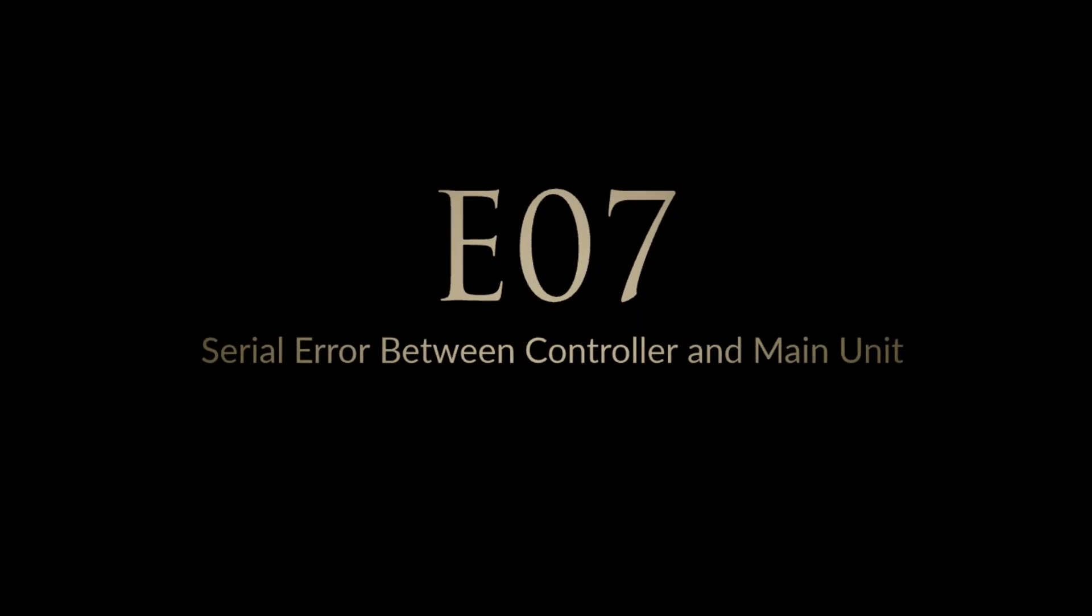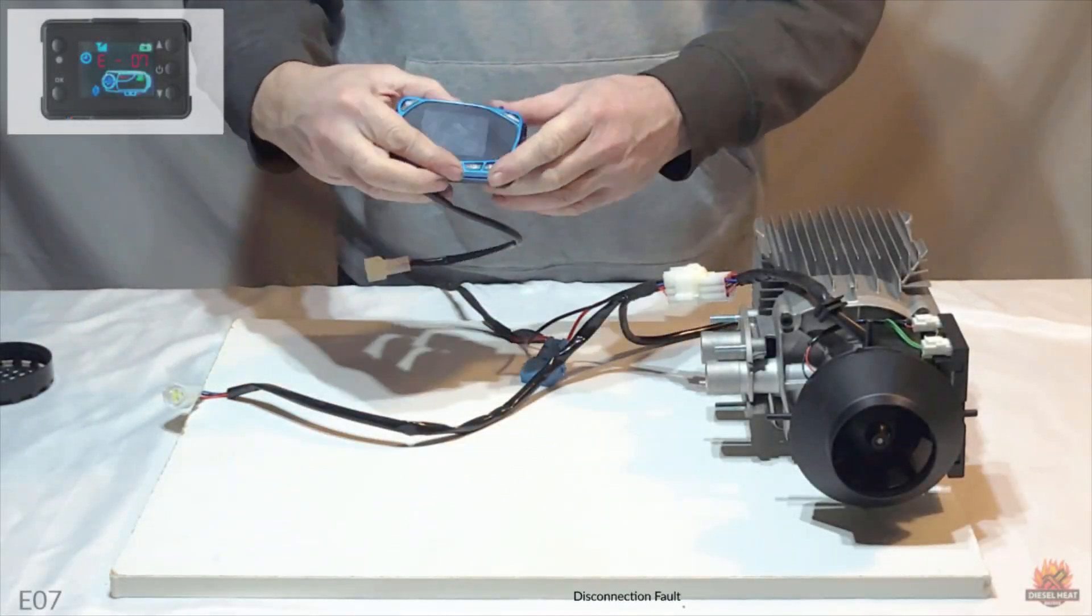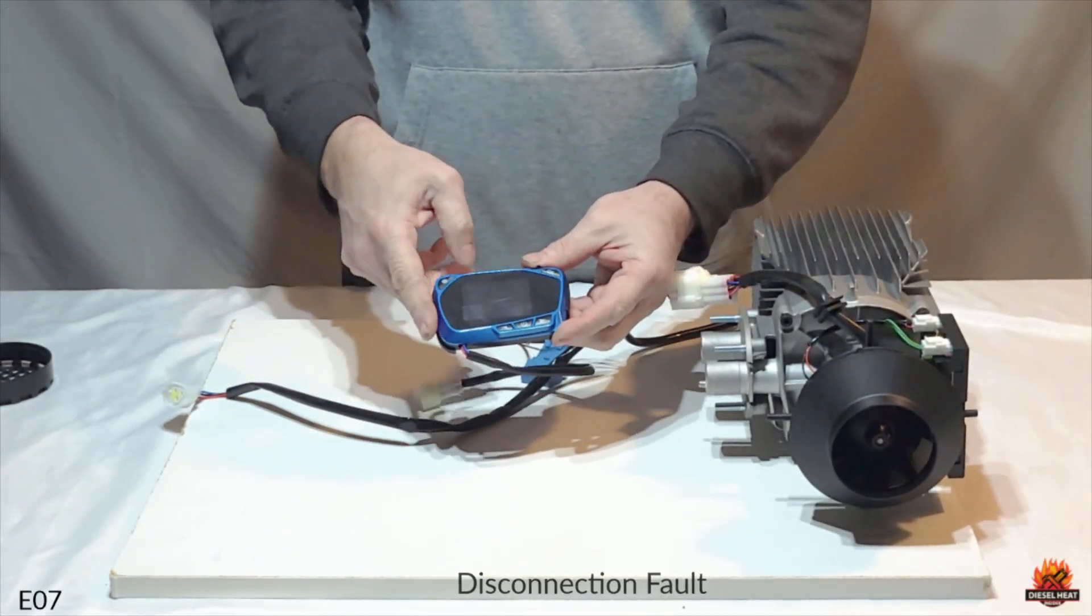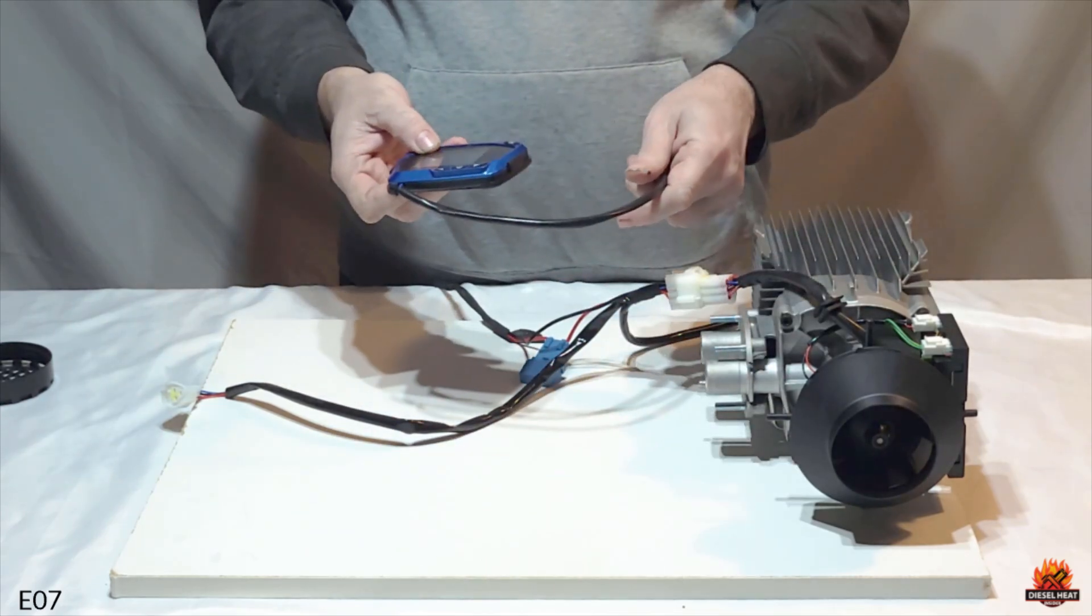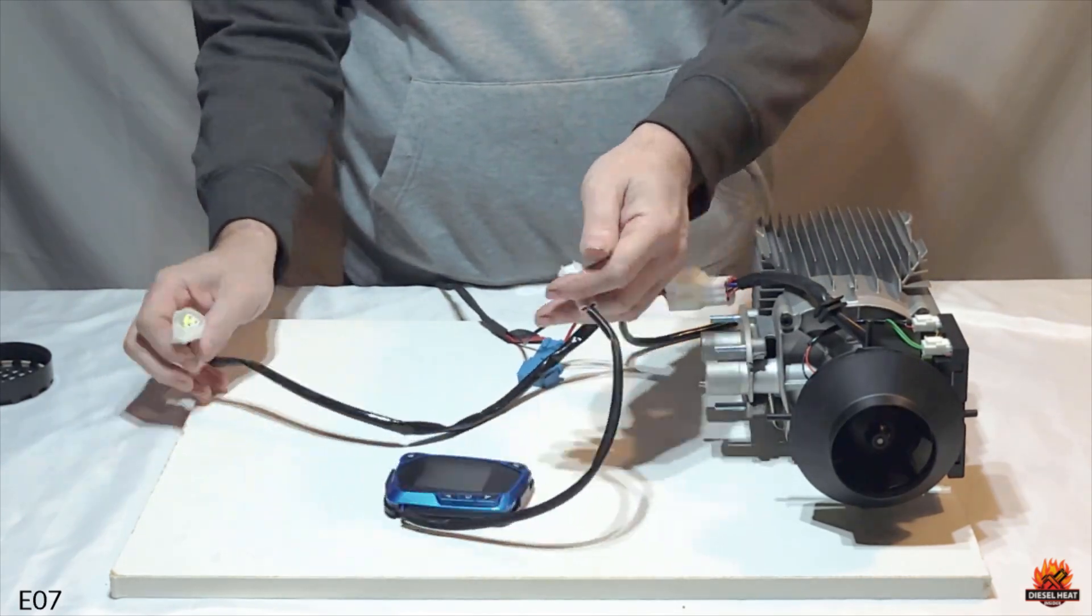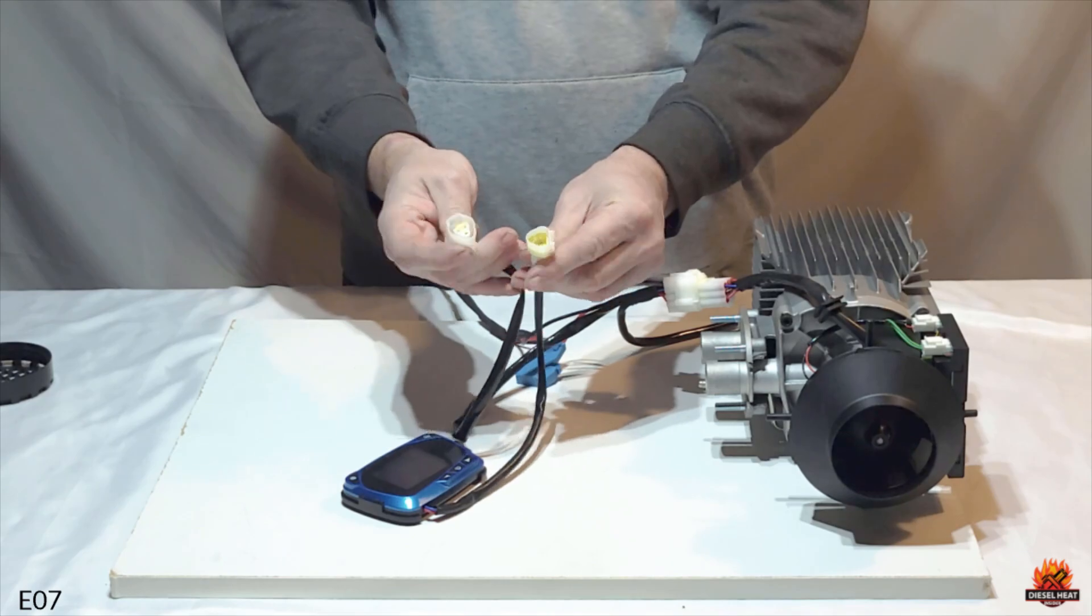Error code 7, serial error between controller and main unit. There are three possible reasons that can cause error 7. The first reason could be that the wire in the plug for the controller may be loose, causing a faulty or no connection.